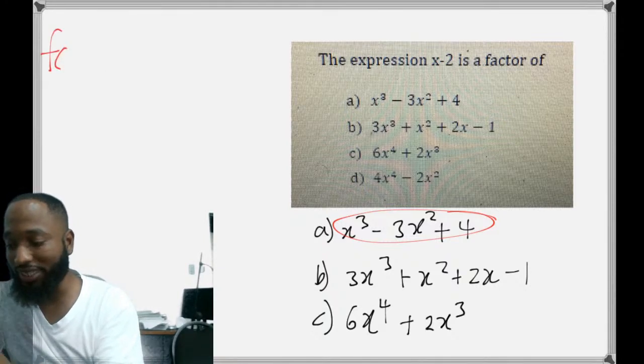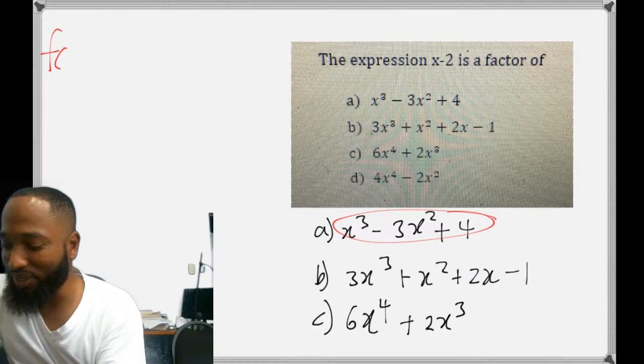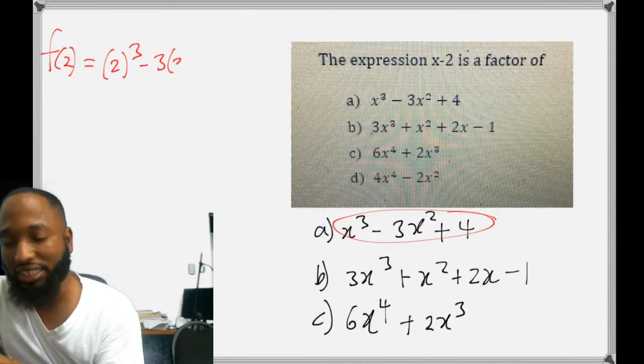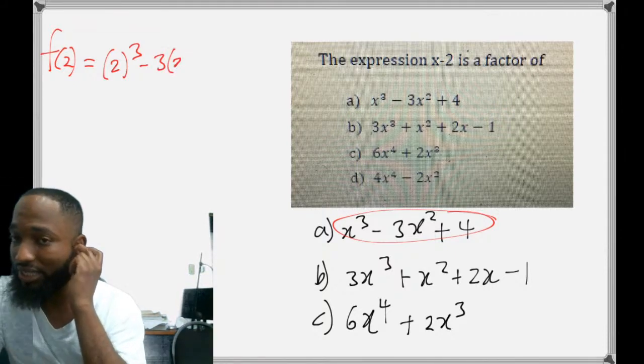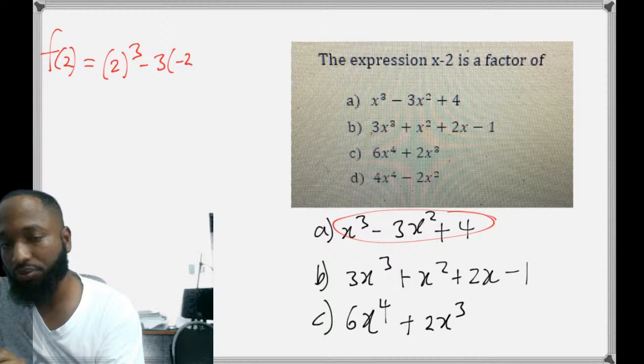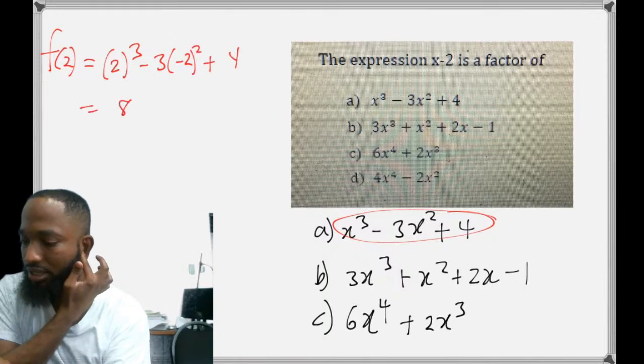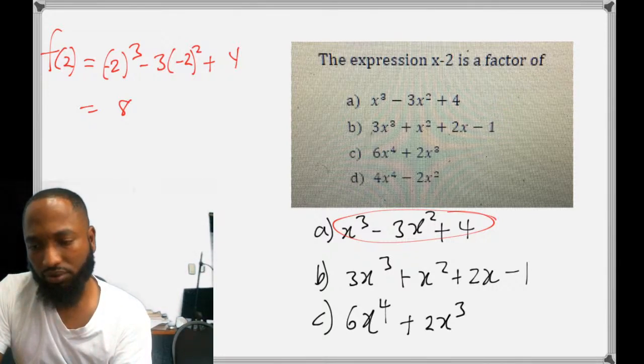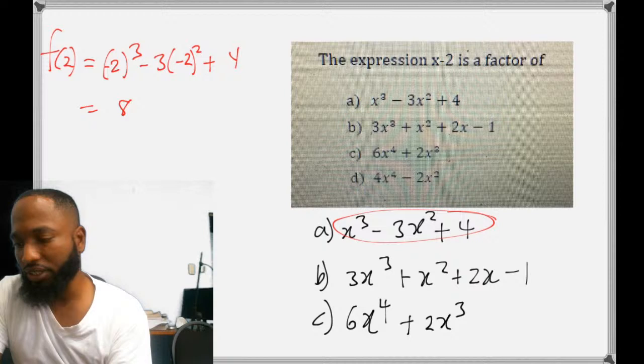f of 2 is 2³ minus 3(2²) + 4, and we're trying to test and see if this will give us zero. So this is 8. It wasn't, is it negative 2 or positive 2? It's positive 2.